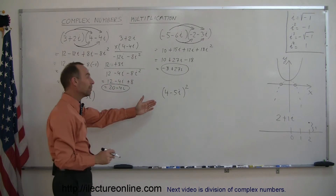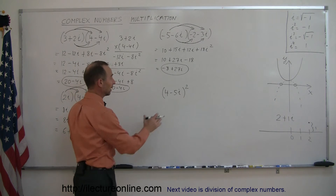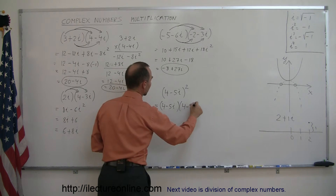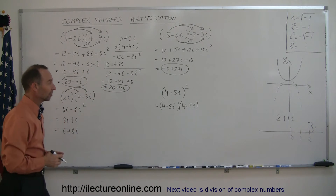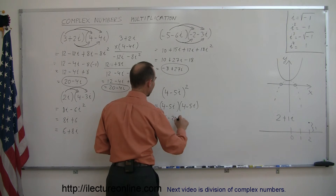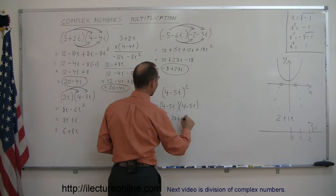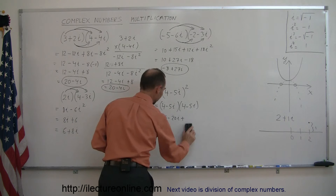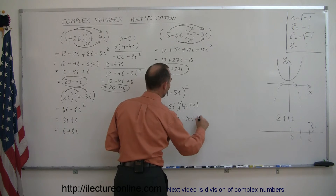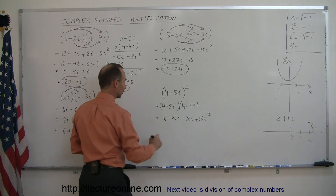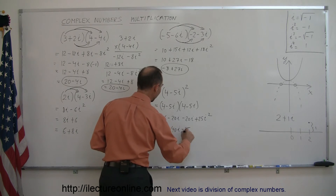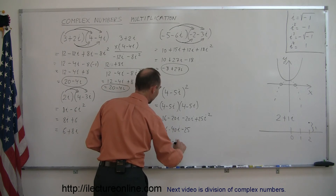Finally, same approach but in a different form — this is four minus five i multiplied by itself. You multiply four times four, which is sixteen, four times negative five i is negative twenty i, negative five i times four is also negative twenty i, and negative five i times negative five i is plus twenty-five i squared. Adding the middle terms gives negative forty i, and i squared becomes negative one so that's minus twenty-five. This equals sixteen minus forty i minus twenty-five, which is negative nine minus forty i.